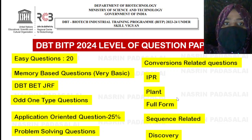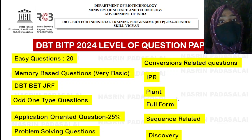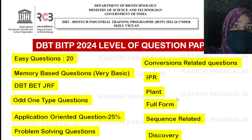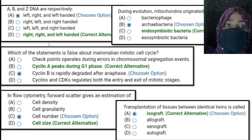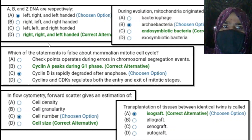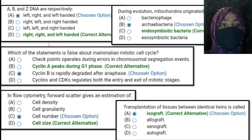First thing: 20 questions among the 100 questions asked in the question paper will be very easy, or memory-based. Memory-based means very basic — even people who didn't prepare for the DBT BITP examination can give the correct answer. For example, the first question is about DNA rotation: A form of DNA is right-handed, B form of DNA is right-handed, only Z form is left-handed. They didn't even ask about major groove, minor groove, or other configurations — they simply asked about rotation.